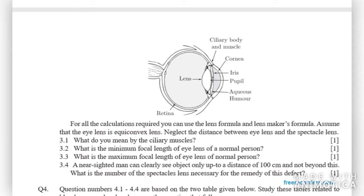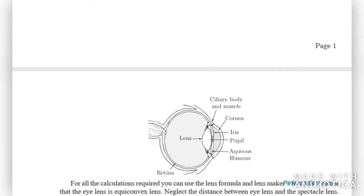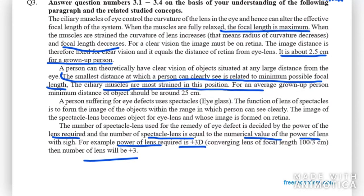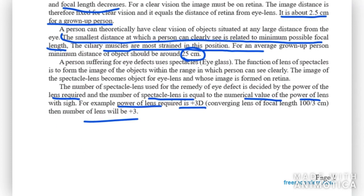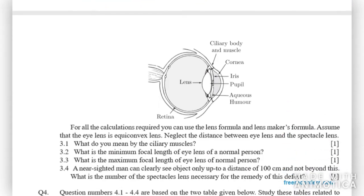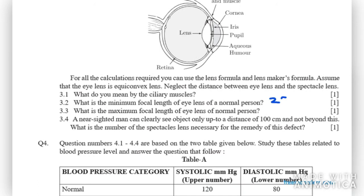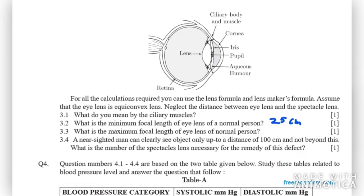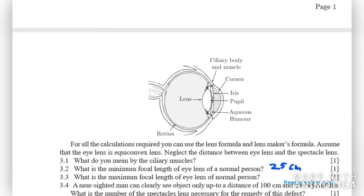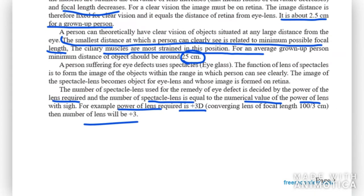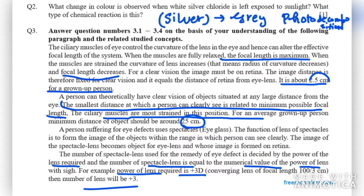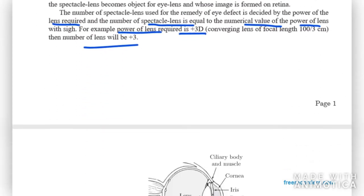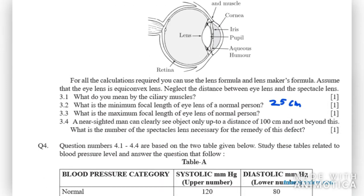The second part: what is the minimum focal length of eye lens of a normal person? Here we have the answer for it. It is 25 cm. Next: what is the maximum focal length of eye lens of a normal person? The answer is 2.5 cm. For clear vision, the maximum focal length is 2.5 cm.